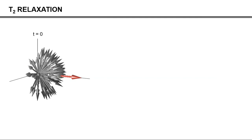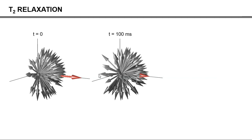The disappearance of the magnetization from the transverse plane is governed by something called T2 relaxation. The underlying mechanisms are the same, in which molecular tumbling and the fluctuations in magnetic field lead to a loss of phase coherence. So, after we wait, let's say 100 milliseconds, you can see that the spins have lost a little bit of phase coherence, and if you add them all together, the total net magnetization in red is now reduced. However, the level of phase coherence in NMR is pretty amazing. If we look at protons at 7 Tesla, then during these 100 milliseconds, the spins have precessed 30 million times, and they have only lost a little bit of phase coherence.